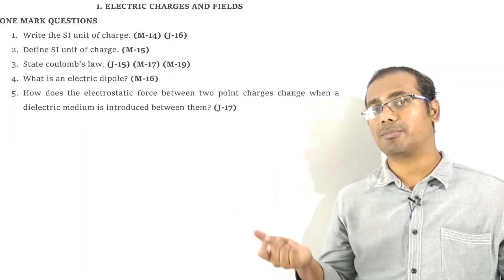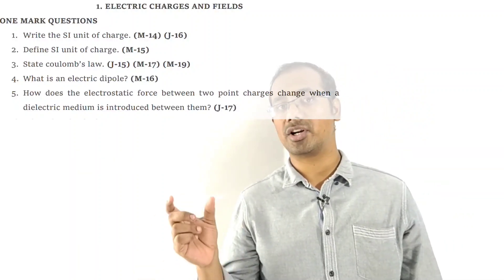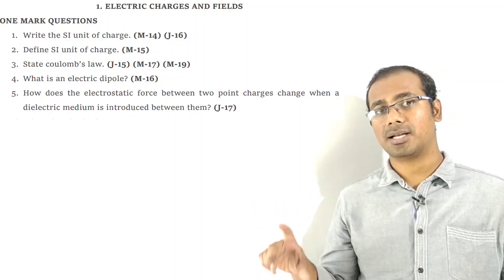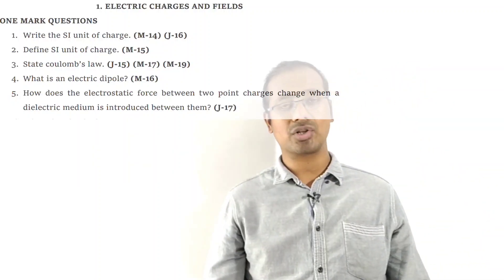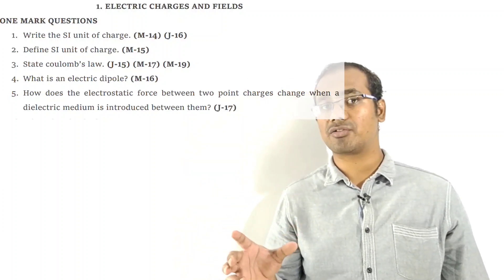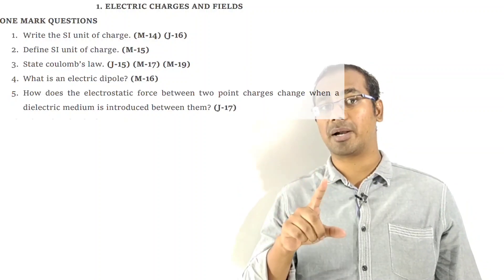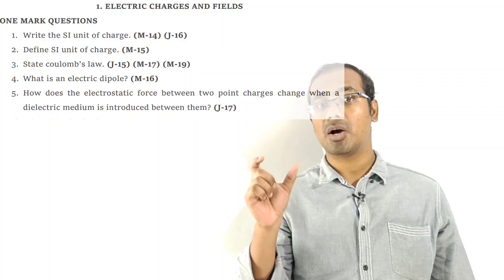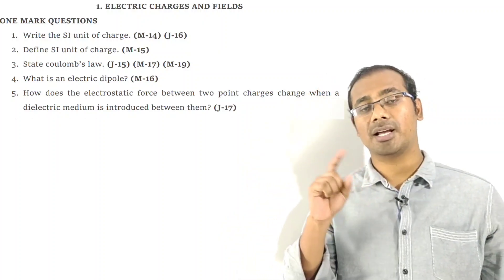First important question: write the SI unit of charge. The answer is the coulomb. The next important question: define the SI unit of charge. The SI unit of charge is the coulomb, so define one coulomb.